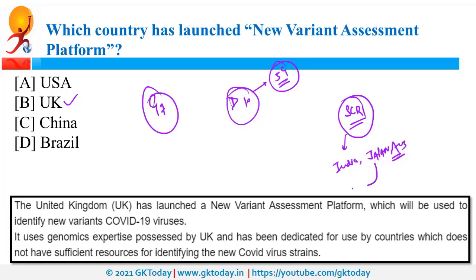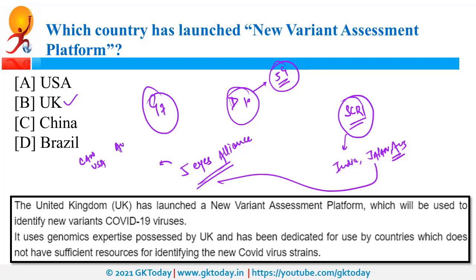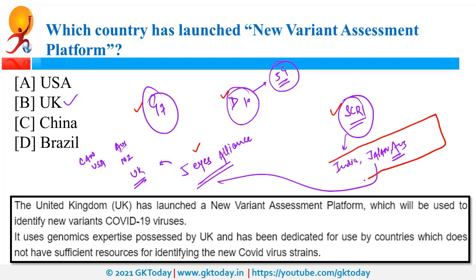Japan was also in news because of the Five Eyes Alliance — an intelligence-sharing group of five countries: Canada, USA, Australia, New Zealand, and UK. As per media reports, Japan is going to be the sixth partner of this alliance. In one context we covered G7, D10, Five Eyes Alliance, and SCRI. India, Japan, Australia, and USA are also part of Quad — the Quadrilateral Security Dialogue.